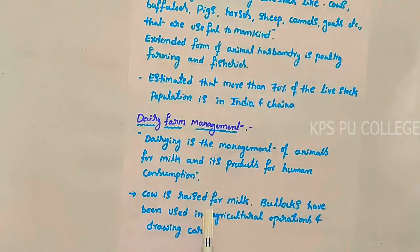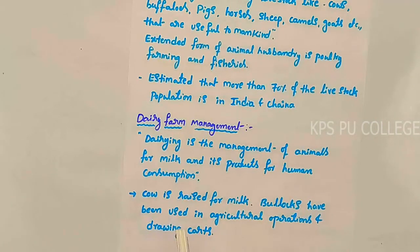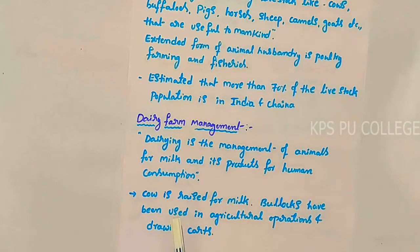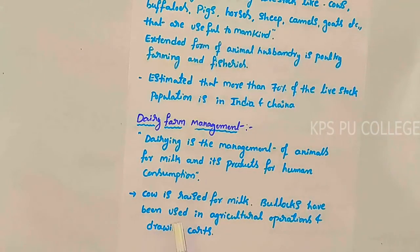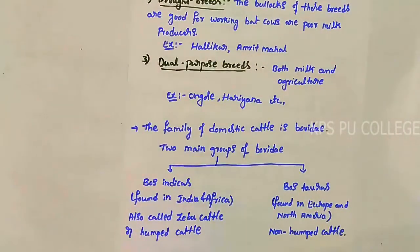In dairy farm management, the cow is raised for milk. Bullocks have been used in agricultural operations and for drawing carts. So in dairy farm management, cows are raised for milk and bullocks are mainly used for agricultural practices.